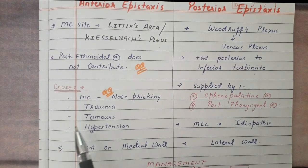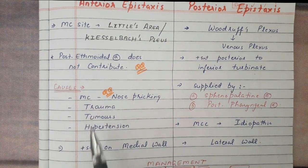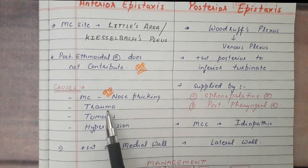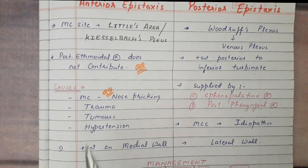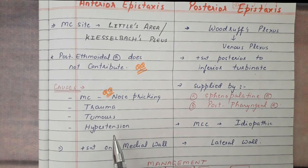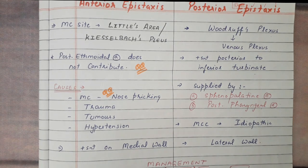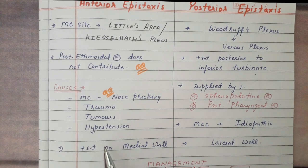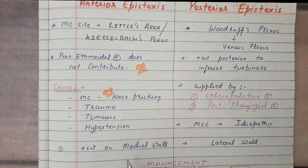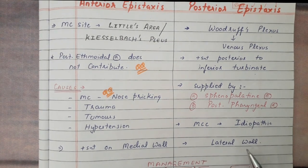The most common cause of anterior epistaxis is nose picking, followed by facial and head traumas, tumors of the nose, and in elderly people, hypertension is a major cause. For posterior epistaxis, the most common cause is idiopathic. Anterior epistaxis is present on the medial wall, whereas posterior epistaxis is present on the lateral wall.